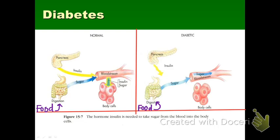The most common general medical emergency you might encounter is a patient suffering from a diabetic emergency. To understand diabetes, we first need to understand how the normal patient functions. Normally, when we eat food, digestion begins in the stomach and the food travels down into the small intestine, where it is broken down into simple sugars.